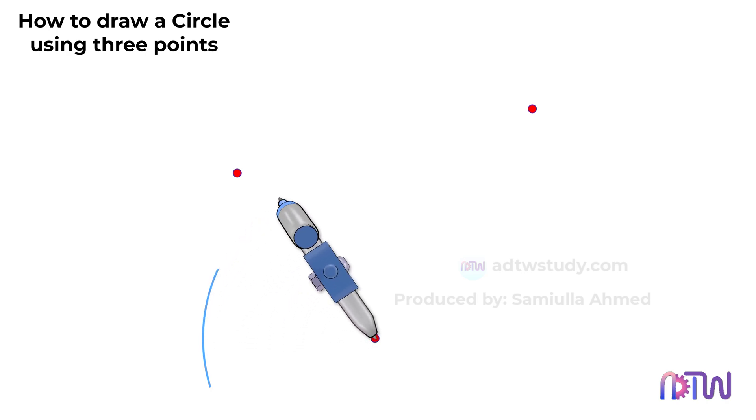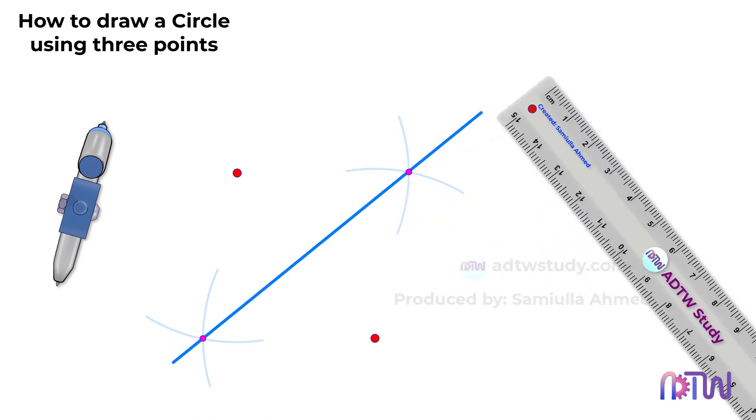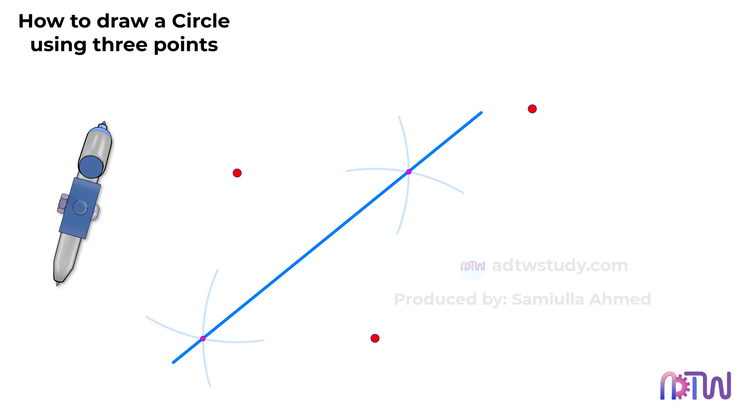After this, draw a line passing through the intersections of these arcs. Similarly, do the same for the other pair of points.